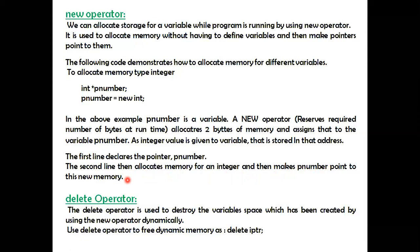The delete operator is used to destroy the variable space created by the new operator dynamically. Using 'delete ptr', that memory is freed and can be reused by other programs or data. So using new we allocate memory, and using delete we de-allocate and reuse the same memory.